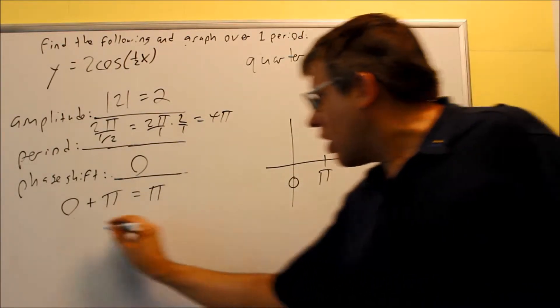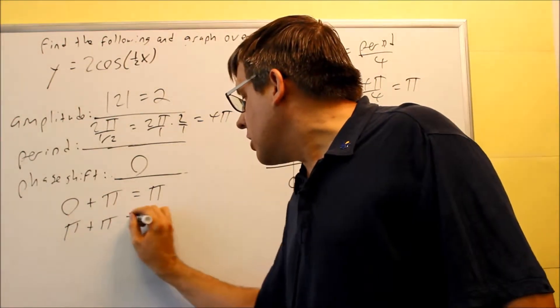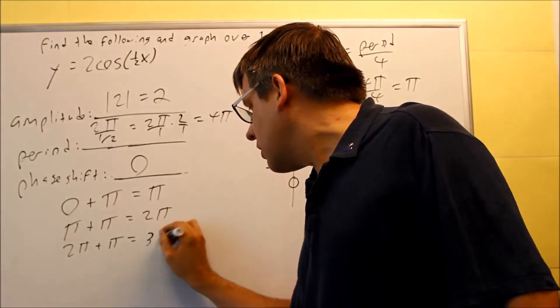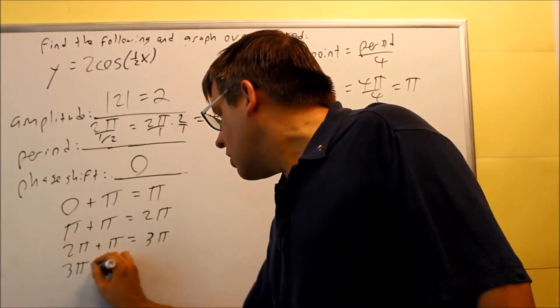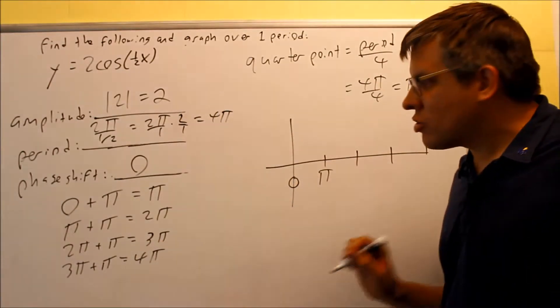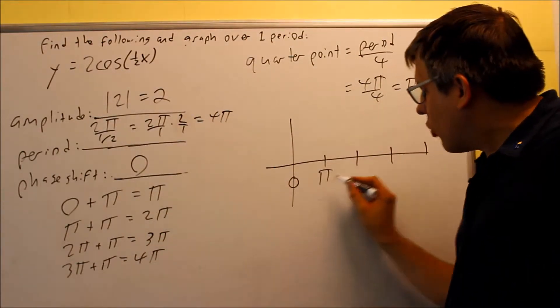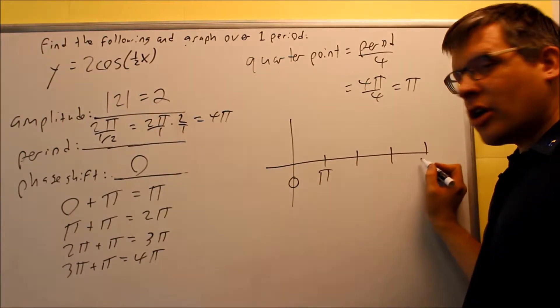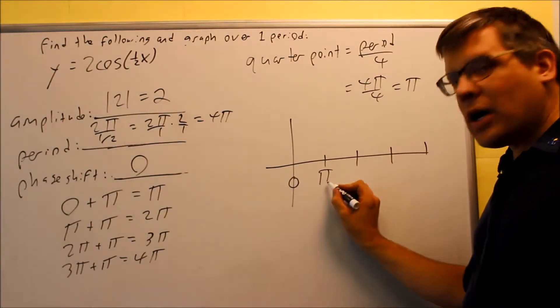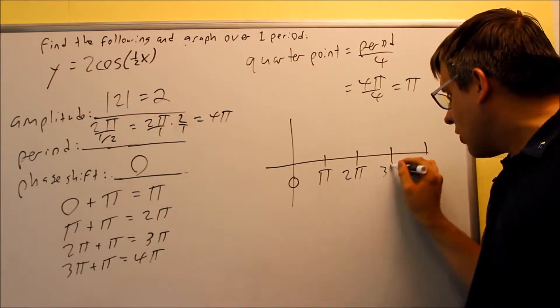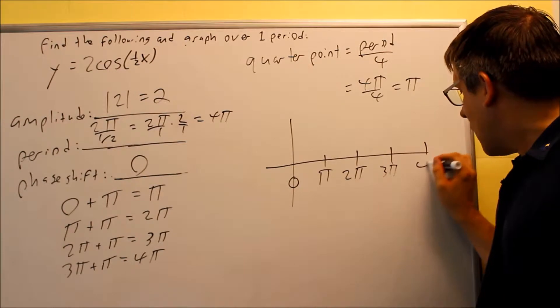To find the next one, all you're going to do is add another π to it, and so you get 2π, and then we add a π again, you get 3π, and add another π, and you get 4π.